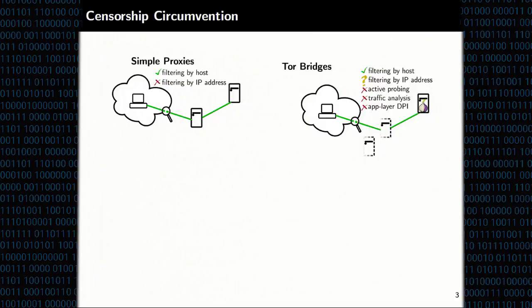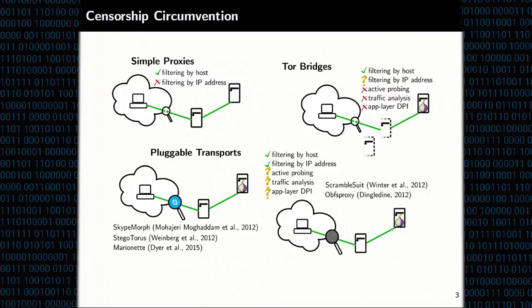Tor bridges are relatively effective. However, advanced techniques like active probing and traffic pattern analysis have allowed some countries to detect these as entry points into the Tor network. As a response, many pluggable transports have been proposed, separable into two categories: those that disguise traffic by making it look like allowed traffic — for example, Skype — and those that make traffic look unlike anything the censor has seen before.